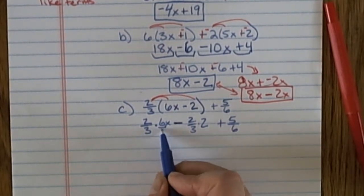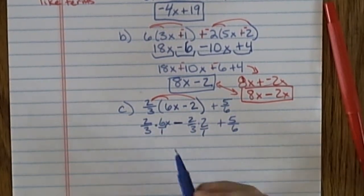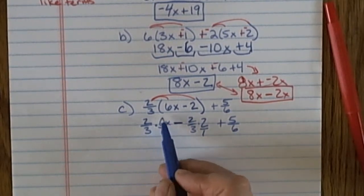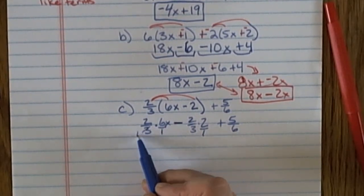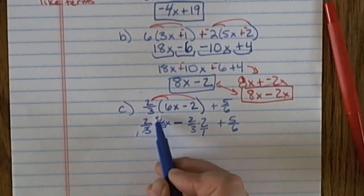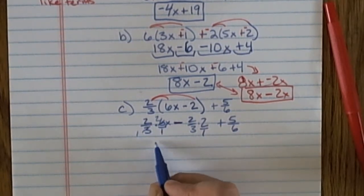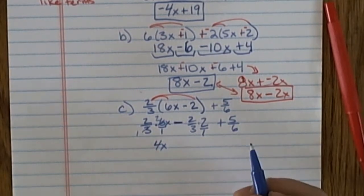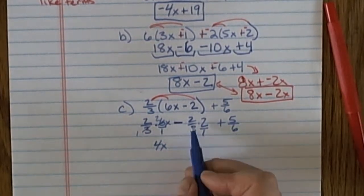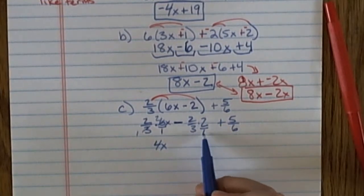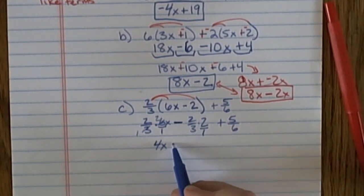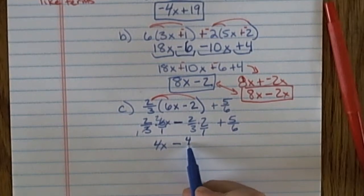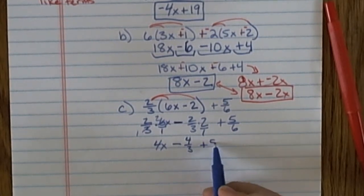I'm going to evaluate. To multiply a fraction by a whole number, I put a 1 under the whole number. On this first set, I can do some canceling with a common factor of 3. So I have 2 times 2 is 4x over 1, and I don't need to write over 1. On the second term, I have 2/3 times 2. Nothing cancels, so I just get 4/3. And I have plus 5/6.